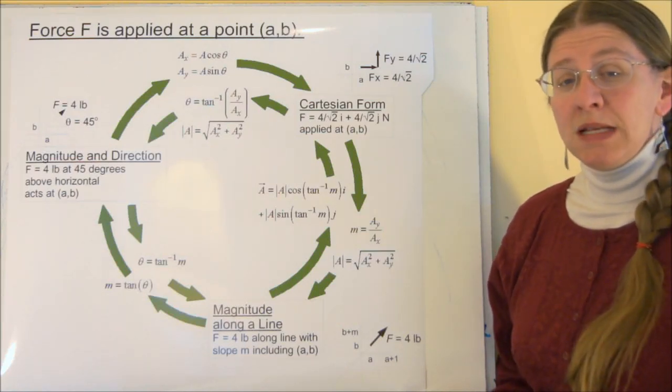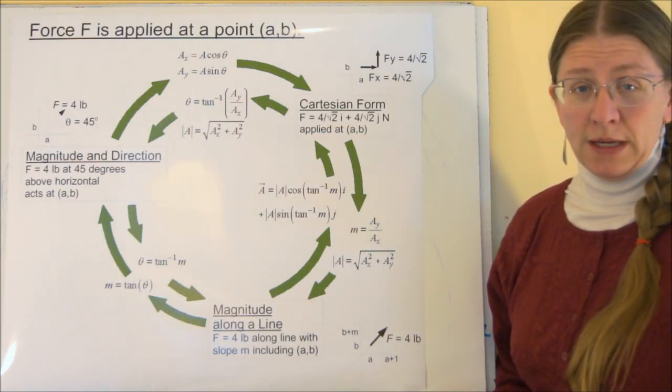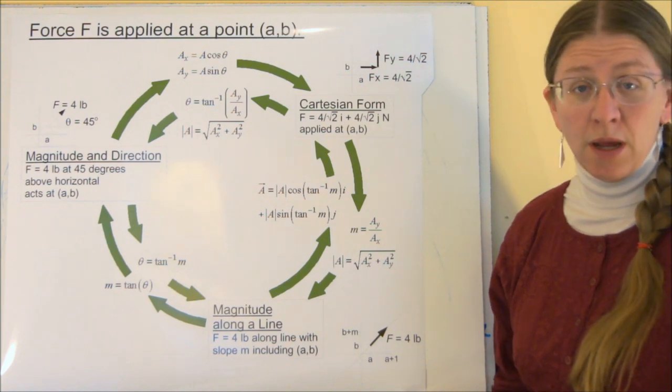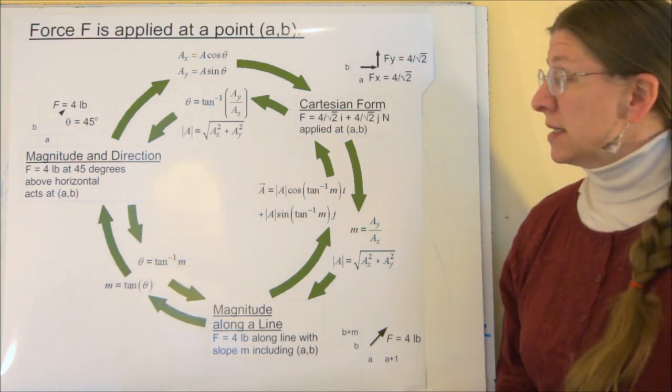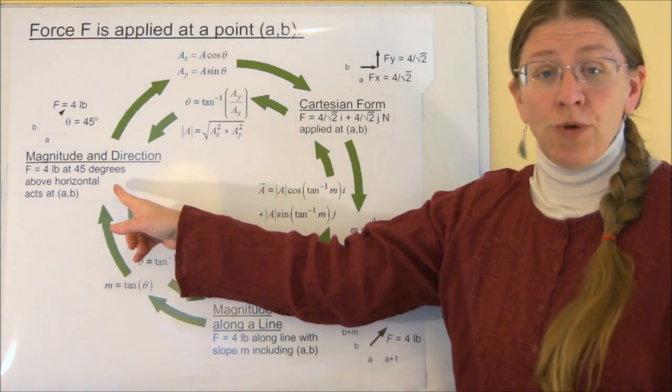When we talk about vectors, we can specify the vectors in one of three ways. So this is how the information is going to come to you. The most common way you think about that when you first learn about what a vector is, is that you say a vector is something that has magnitude and direction.